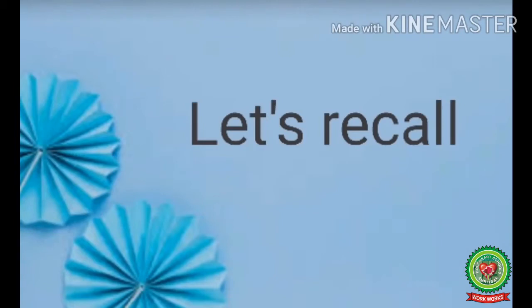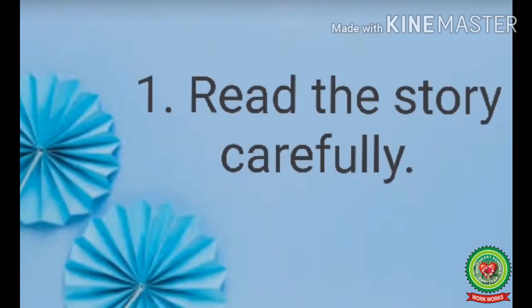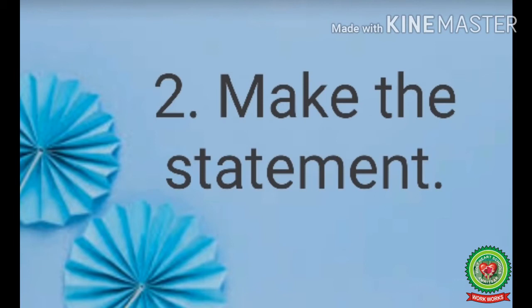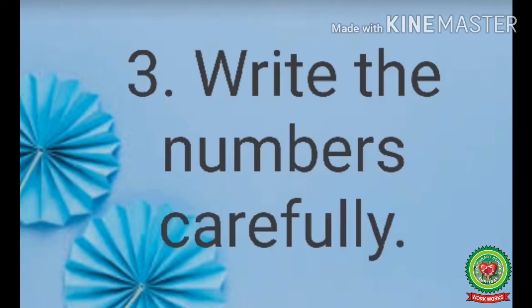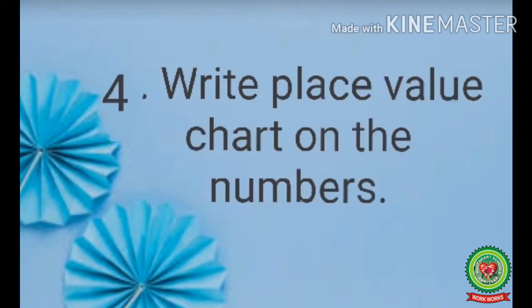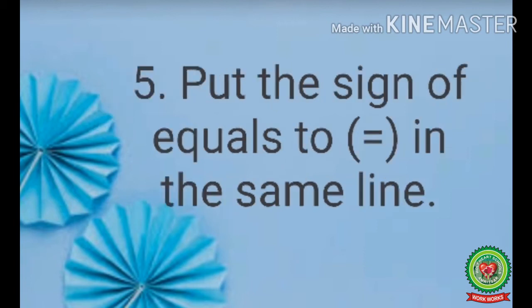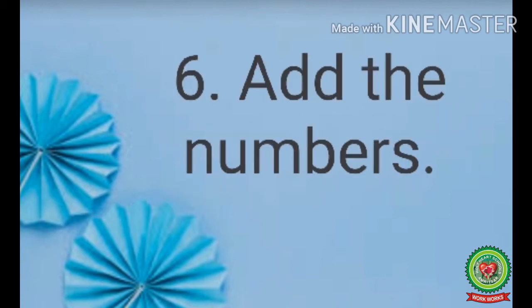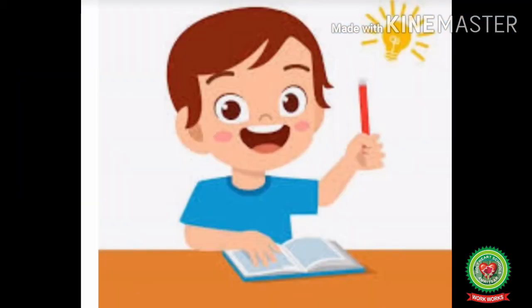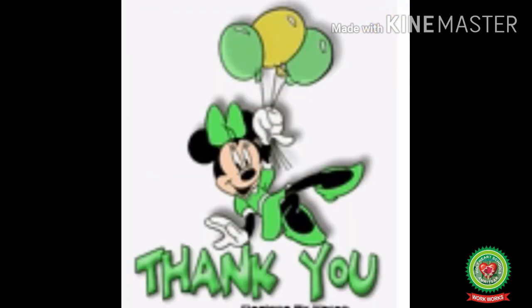Now let us recall what we have learned today. Number one: read the story carefully. Number two: make the statement according to the given story. Number three: write the numbers carefully. Number four: write the place value chart on the numbers. Number five: put the sign of equals to in the same line. Number six: add the numbers. I hope you all understood how to do addition story sums. Now take out your homework, maths book, and copy and do the related sums. Thank you.